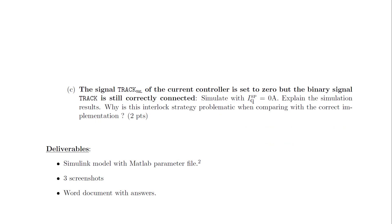In the third and final situation, the controller goes to tracking mode when the converter is disabled — the binary track signal is correctly connected — but the track value being tracked is simply set to zero. Simulate with an IQ set point of zero amps, explain the simulation results, compare with the first situation, and explain why this third interlock strategy is problematic.